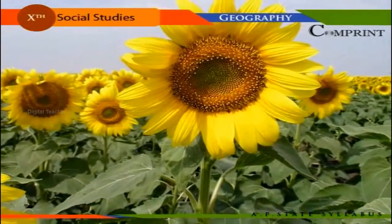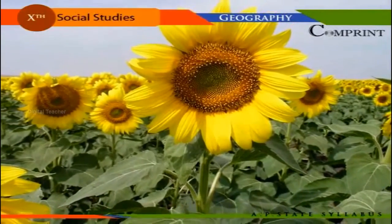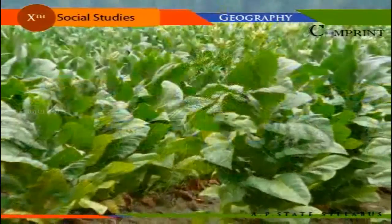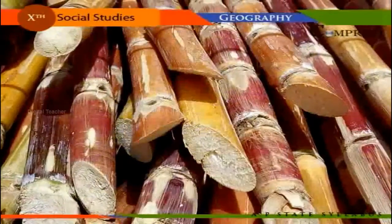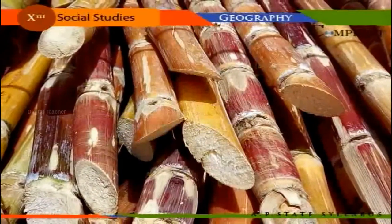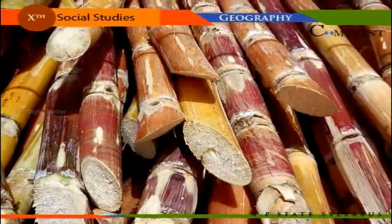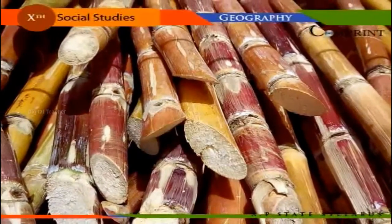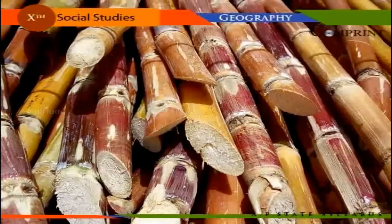These industrial crops can be classified as fiber crops like cotton and jute; plantation crops like tea, coffee, sugarcane, and rubber; oilseed crops like groundnut, sesame, sunflower, and castor; and narcotics like tobacco. India is one of the leading countries in the world in the production of oilseeds, cotton, sugarcane, tobacco, jute, coffee, and tea.